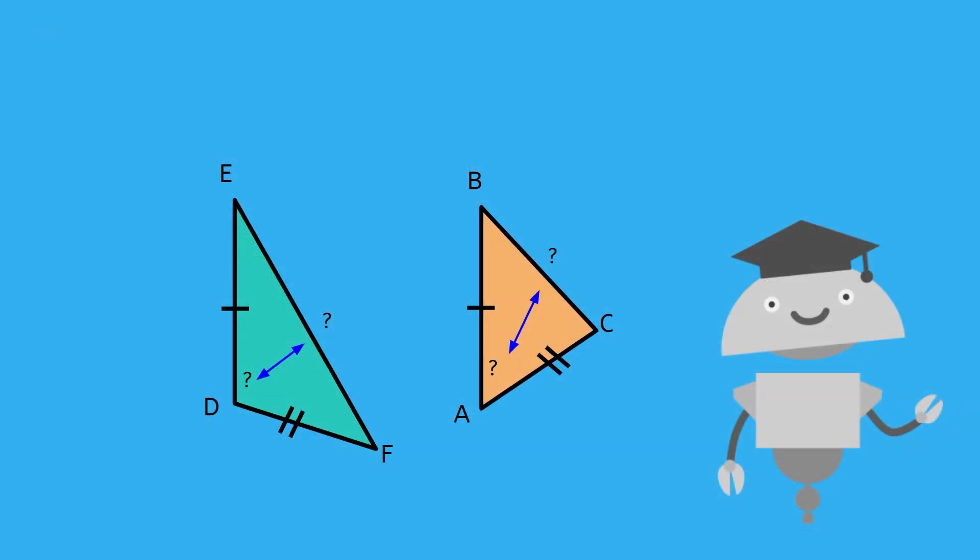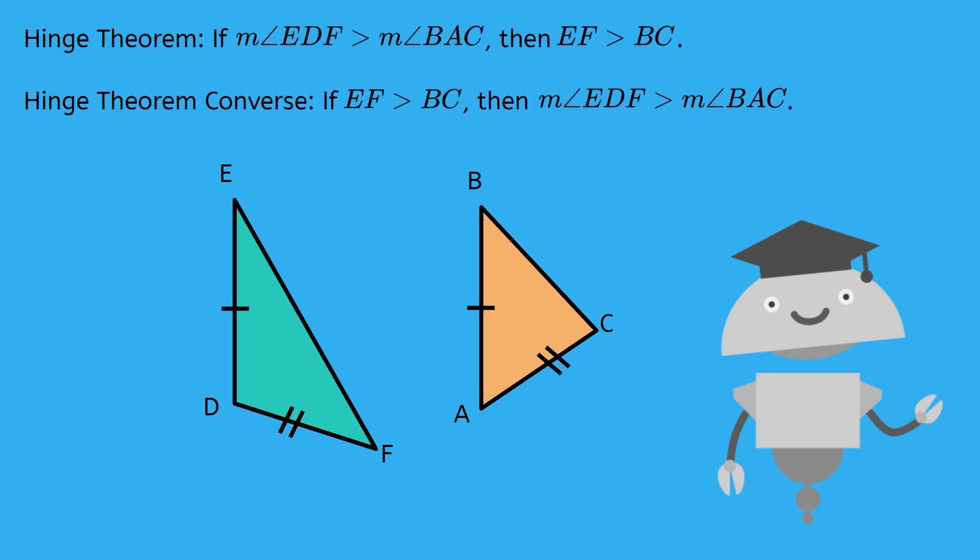Now you know how to solve problems when a triangle has two sides that match two sides in another triangle. We can use the hinge theorem, or its converse, to solve for an unknown. See you next time!